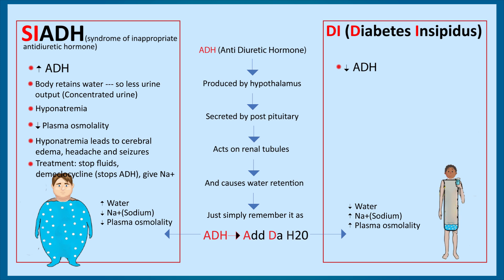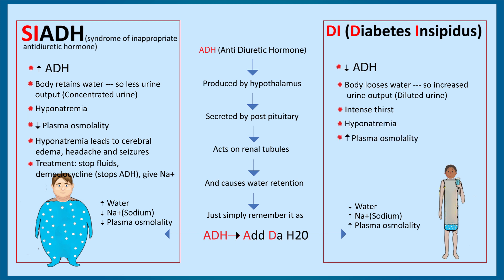In diabetes insipidus there is decreased ADH, so the body cannot retain water and starts losing water. There would be increased urinary output — that is diluted urine. To compensate for the water loss, the patient would feel thirsty and want to drink more water, so there will be intense thirst. As the body has lost more water, there will be increased sodium content and increased plasma osmolality.